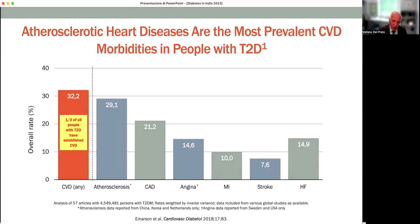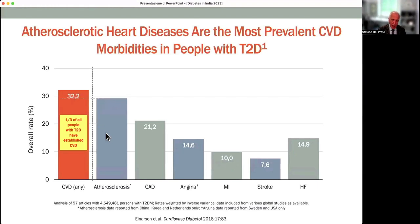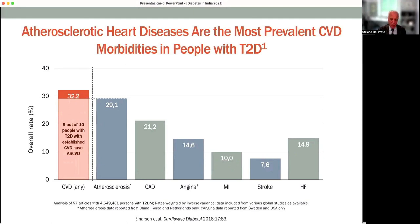One out of three people with type 2 diabetes have established cardiovascular disease. On the right-hand side of the slide, you can see the prevalence of the different conditions. When you consider atherosclerotic conditions, atherosclerosis accounts for 29% of them. So out of the 30% of people with type 2 diabetes who have established cardiovascular disease, 9% have an established atherosclerotic condition. Atherosclerosis and cardiovascular disease are very common in people with type 2 diabetes.